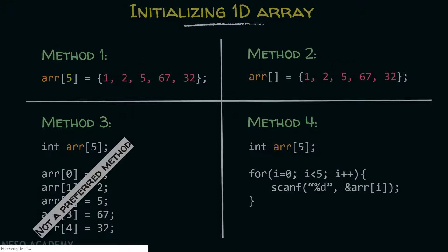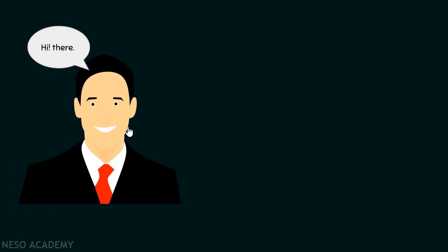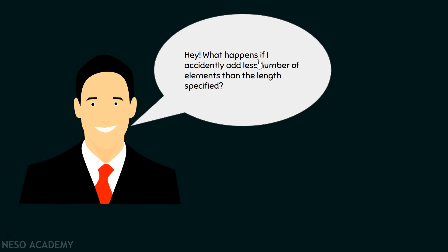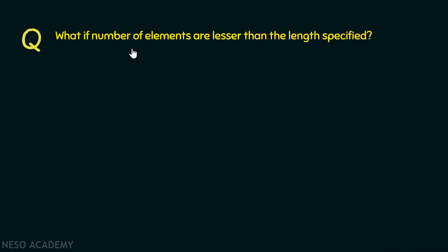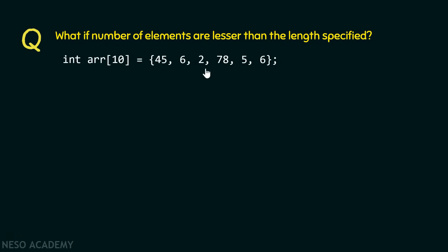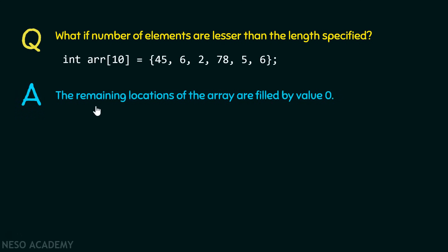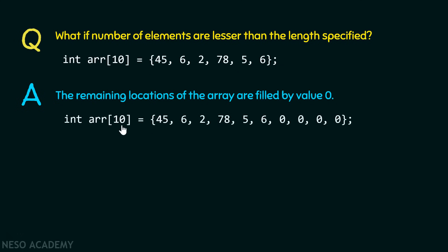Now let me introduce my friend Roni, a software engineer at XYZ company. He asks: what happens if you accidentally add fewer elements than the length specified? For example, if you specify the length as 10 but enter only six elements, what happens to the rest of the locations? The answer is that the remaining locations of the array are filled by value zero. So if the length is greater than the number of elements entered, the rest of the locations automatically get filled by zero.